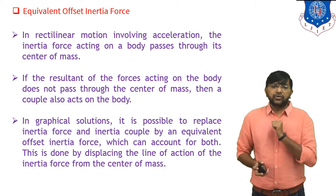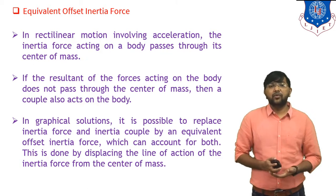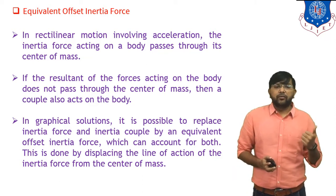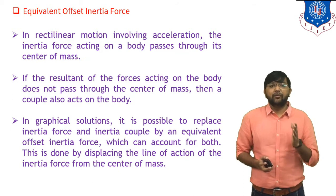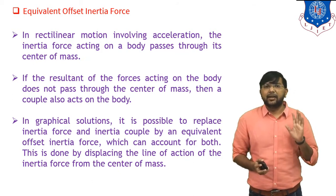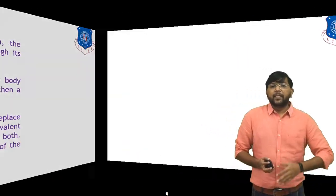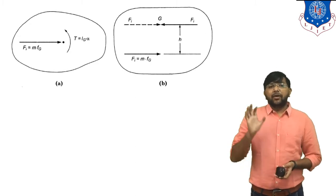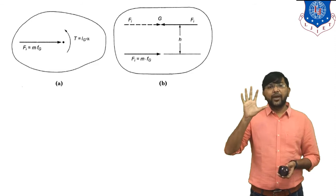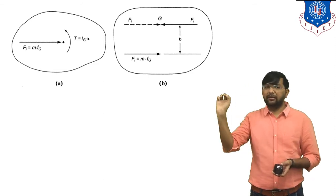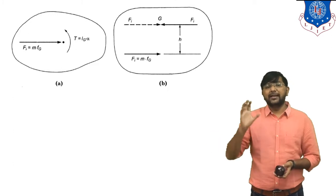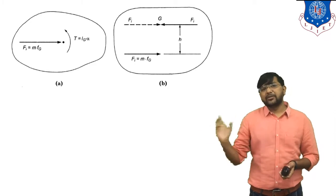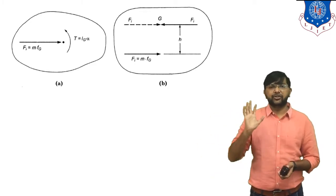In a graphical solution it is possible to replace the inertia force and inertia couple by an equivalent offset inertia force, which can account for both. This is done by displacing the line of action of the inertia force from the center of mass. In the first diagram, one force is applied on the body and the line of action passes through the center of gravity. The inertia force equation is F equals M times Fg, where M is the mass and Fg is the acceleration of the body.